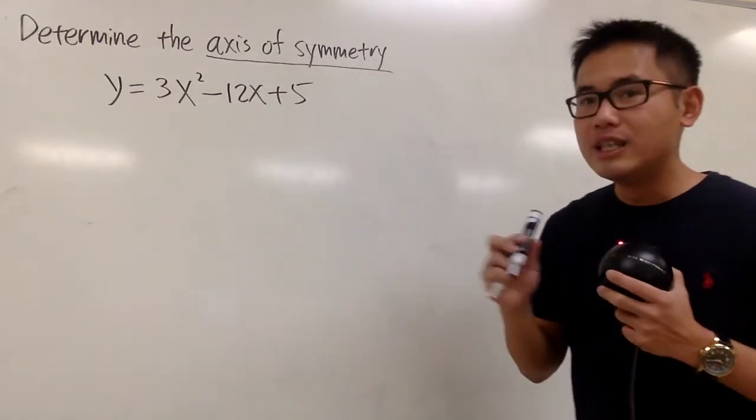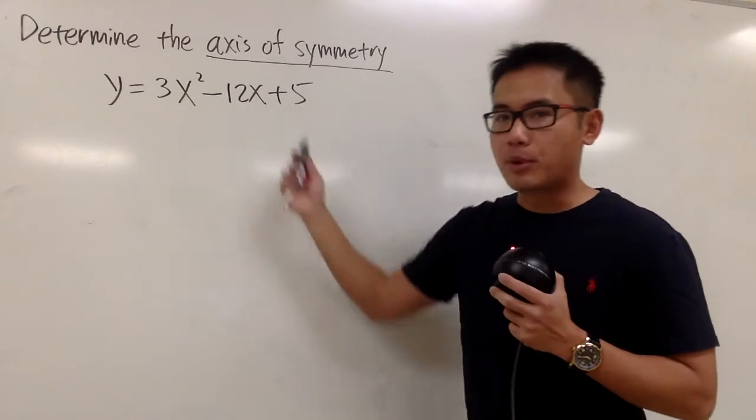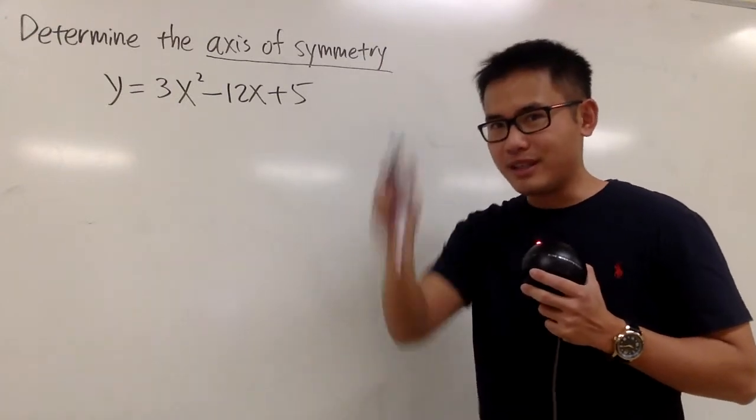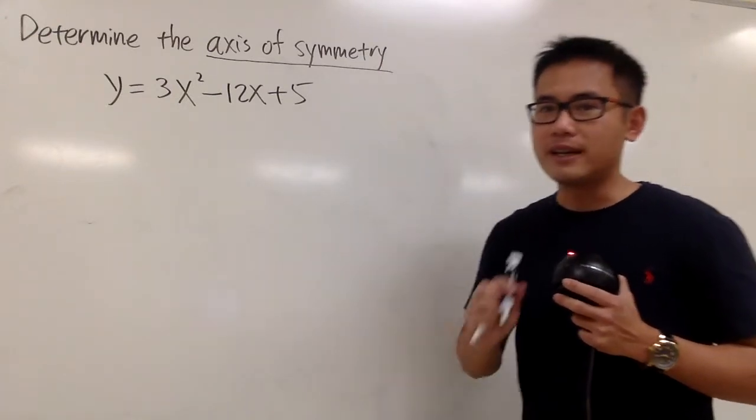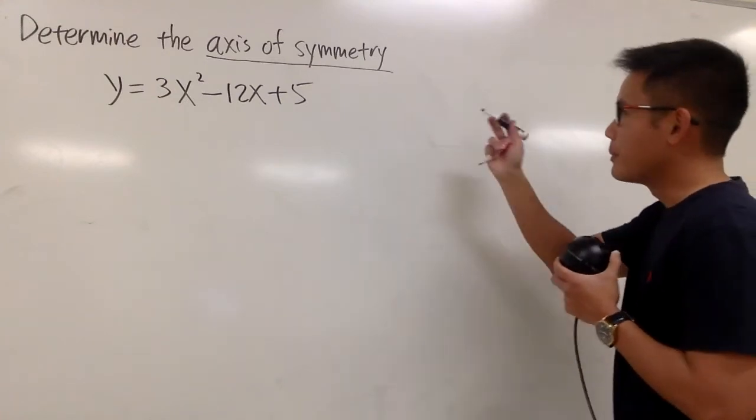And what do we need to do this? Remember, the axis of symmetry of a parabola is pretty much right in the middle, right? And that's where the vertex should be. So, you have to remember the formula.